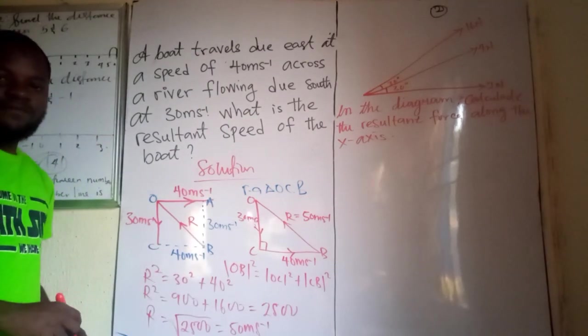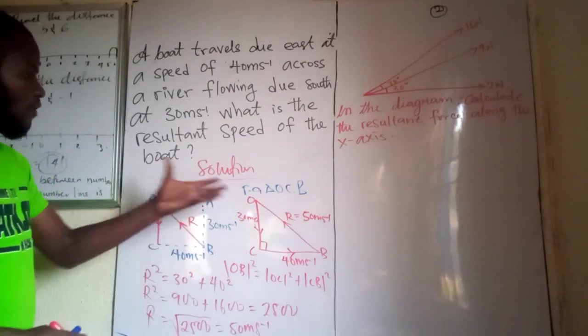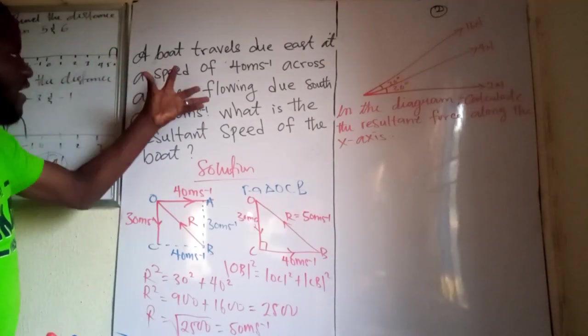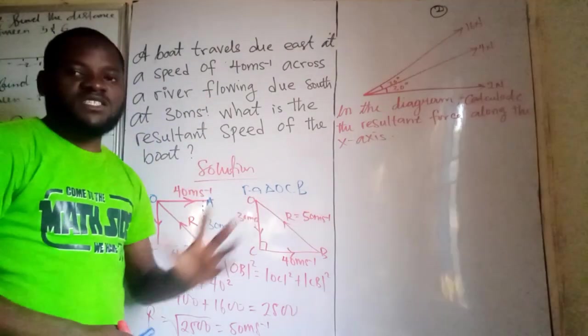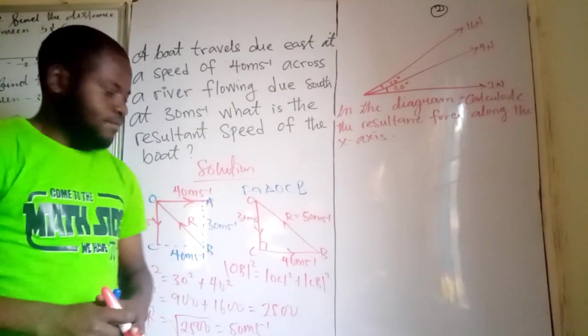Do we get this now? So the resultant of these particular vectors is 50 meters per second.